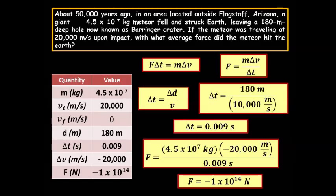In this slide, I have calculated the force. The force is negative 1 times 10 to the 14th newtons. The meteor will hit the Earth with a force of 1 times 10 to the 14th newtons. Therefore, the Earth will resist the impact with a positive 1 times 10 to the 14th newtons.